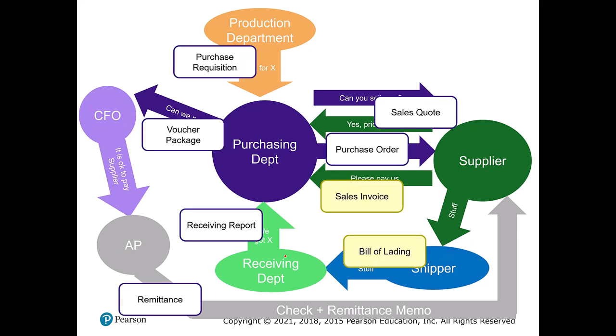A range of documents are created throughout this process. The first is a purchase requisition — from the production department to purchasing — specifying what production needs in terms of quantity, timing, and quality. The purchasing department gets a sales quote from the supplier, which specifies what they can sell and on what terms. Then purchasing sends a purchase order, which is our legal agreement to take part in the transaction. The supplier ships their items with a bill of lading that transfers ownership of the items to us.